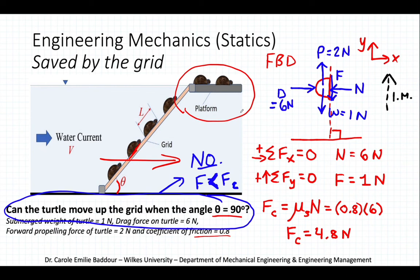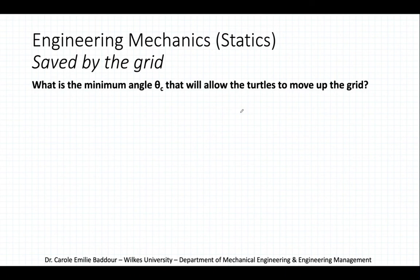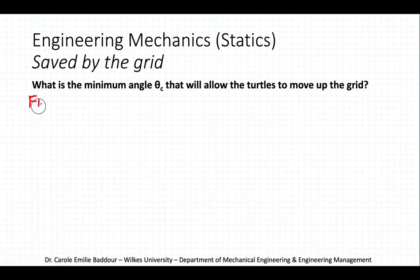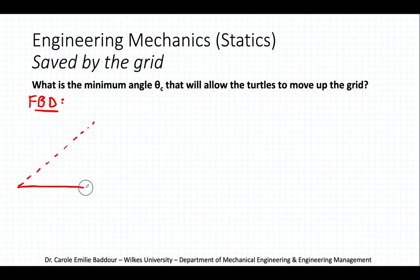Since the grid cannot be set at 90 degrees, the next question is: what is the minimum critical angle theta_c that will allow the turtles to move up the grid? We draw a new free body diagram for the inclined case, with the grid inclined at angle theta_c from the horizontal.